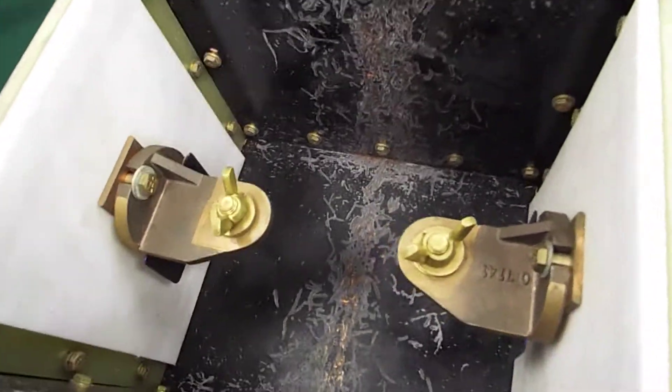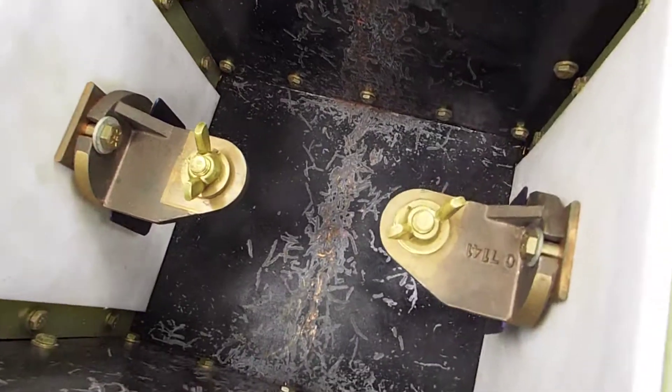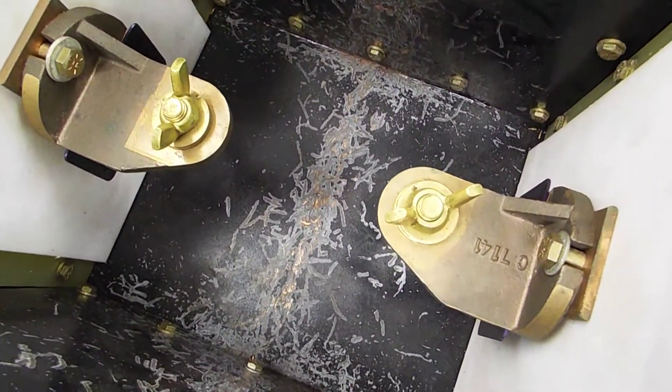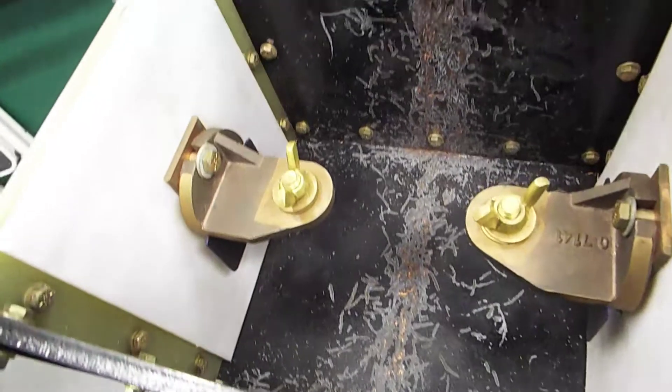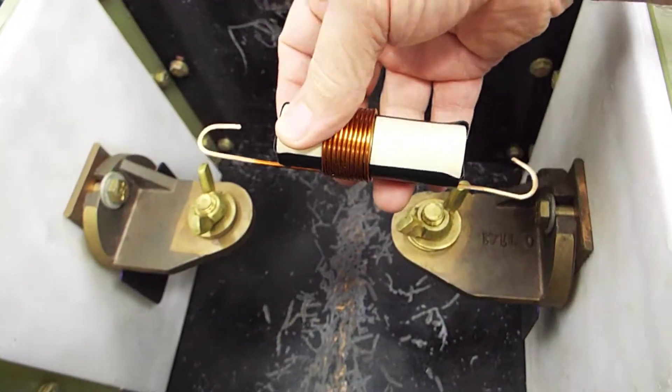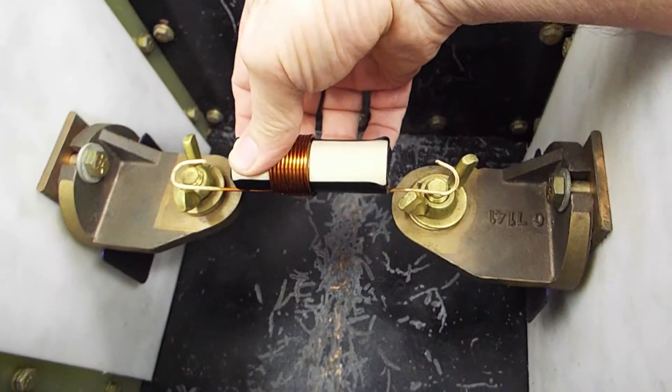As you can see, these two electrodes, this is where the work piece is attached. Here's a typical one for a coin shrink. It would attach between here.